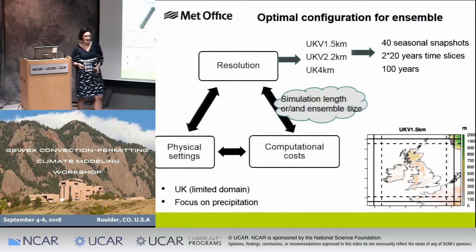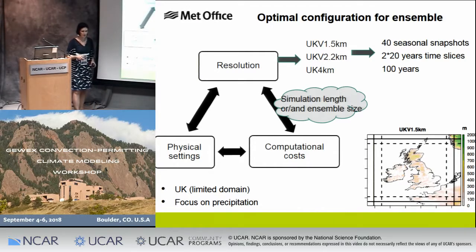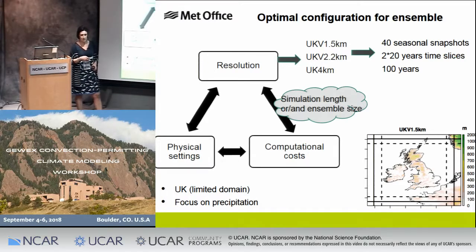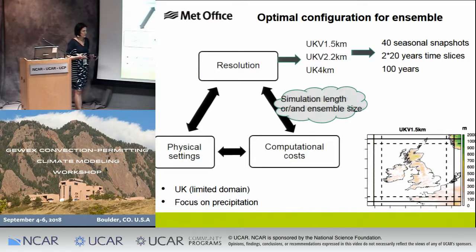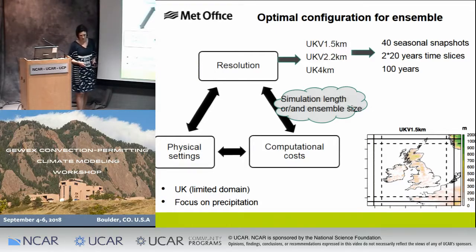For the optimal configuration of the ensemble, there are at least three factors to consider: which resolution to run the simulation at — always talking about convection-permitting resolution — the physical settings to use, and the computational cost. These three factors interrelate and affect each other. Increasing the resolution means increased computational cost, which affects the length of the simulation and the ensemble size we can afford. Physical settings similarly have different computational costs, and some are resolution-dependent.